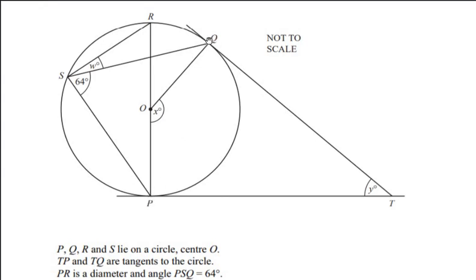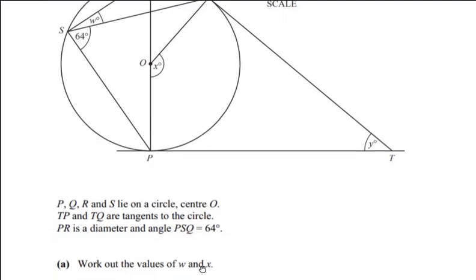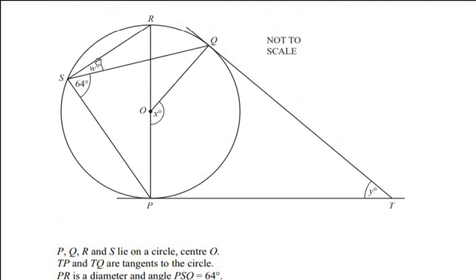The tangents touch the circle at point P and at point Q. PR is a diameter, and angle PSQ is given as 64 degrees. We have to find out the values of w and x.